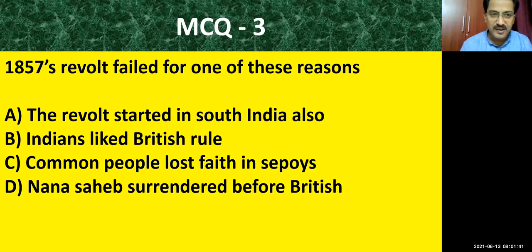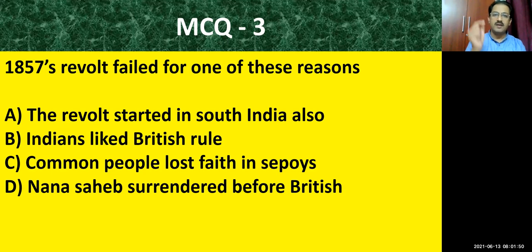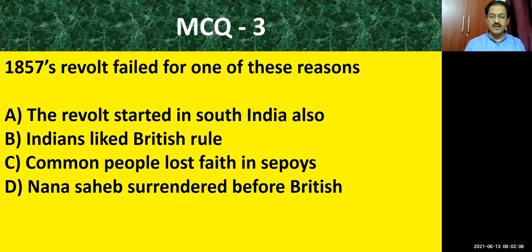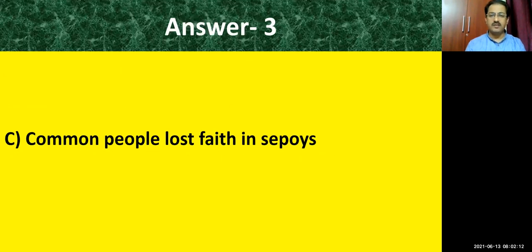MCQ question number three: the 1857 revolt failed for one of these reasons. Choose which reason was responsible for the failure. The options are: the revolt started in South India also; Indians liked British rule; common people lost faith in Sipais; Nana Sahib surrendered before British. The correct answer is: common people lost faith in Sipais, because these soldiers resorted to arson, looting, and dacoity, so common people lost faith in them and it was not a successful revolt.